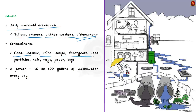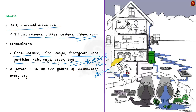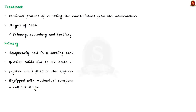The contaminants include fecal matter, urine, soaps, detergents, food particles, hair, rags, paper, toys and anything else disposed in a drain. A person creates an average of 60 to 100 gallons of wastewater every day. Sewers are a network of pipes that bring the sewage to the treatment plant. Having seen the generation, now let us see about the treatment.